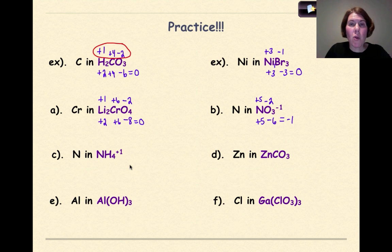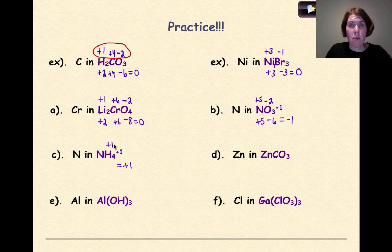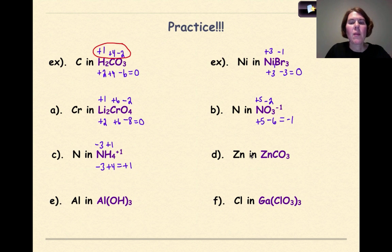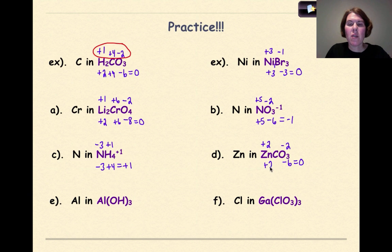Answer C: nitrogen in ammonium, NH4 plus. This polyatomic has a total charge of plus 1. Hydrogen is plus 1; plus 1 times 4 gives plus 4. For the total to be plus 1, nitrogen must be minus 3, because minus 3 plus 4 equals plus 1. Answer D: carbon in ZnCO3. Zinc has a charge of plus 2 on the reference table. Oxygen is minus 2; minus 2 times 3 gives minus 6. For the compound to equal 0, carbon must be plus 4.